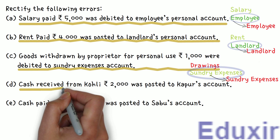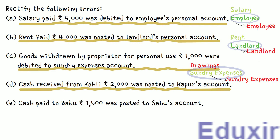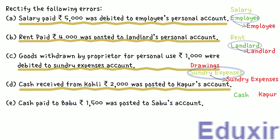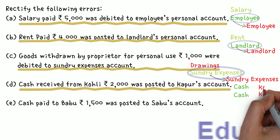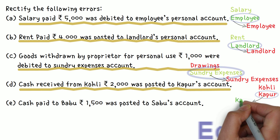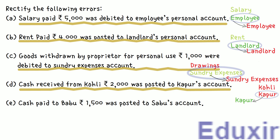Next error: Rs. 2,000 of cash received from Kohli was posted to Kapoor's account. The effect of the wrong entry is to debit the cash account and credit Kapoor's account. Note that this is not an error of principle — it is an error of commission, where the amount was posted to a different personal account. The correct entry: debit Cash Account, and credit Kohli's Account. The cash account is debited correctly. The error is crediting Kapoor's account instead of Kohli's account. Rectification: debit Kapoor's Account Rs. 2,000, credit Kohli's Account Rs. 2,000.